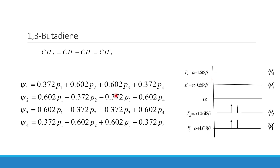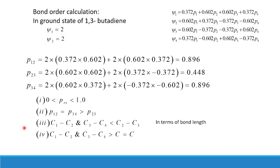There are four wave functions: ψ1, ψ2, ψ3, and ψ4, which have already been calculated. Now we will calculate the pi bond order for the 1,3-butadiene system in the ground state. In the ground state, ψ1 has two electrons and ψ2 also has two electrons. The wave functions for the system are given.